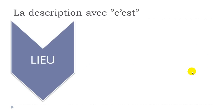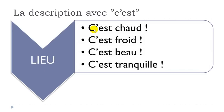Let's see examples describing a place (un lieu). 'C'est chaud' — it's hot/warm. 'C'est froid' — it's cold. 'C'est beau' — it's beautiful. 'C'est tranquille' — it's quiet. Notice that all these adjectives — chaud, froid, beau, tranquille — are at the masculine form, even if the place would be feminine.